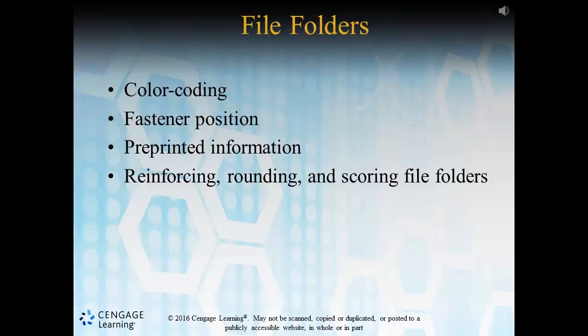A fastener prevents records from turning into chaos of mixed-up documents. These individual documents are secured via adhesive strip, embedded, heat bonded, or docuclip fasteners. The file type will ultimately dictate the type of positioning of these fasteners on patient records. Preprinted information is information on a chart that is already present, allowing a professional to easily fill it out. Allergies, current meds, etc., are some examples of this.